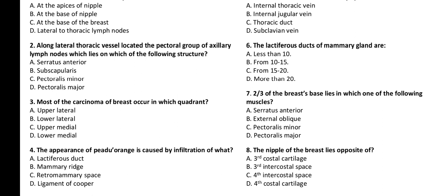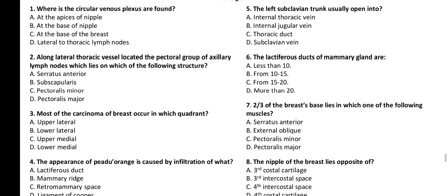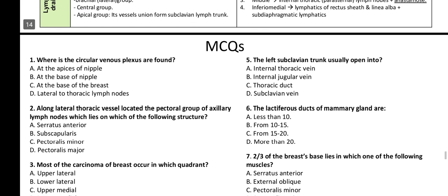Number four: The appearance of peau d'orange — peel of the orange — is caused by infiltration of what? I think it's the ligament of Cooper. I'll go with D for number four. Number five: The left subclavian trunk usually opens into — options include thoracic duct, internal thoracic vein, internal jugular vein. I'll go with A — internal thoracic vein.